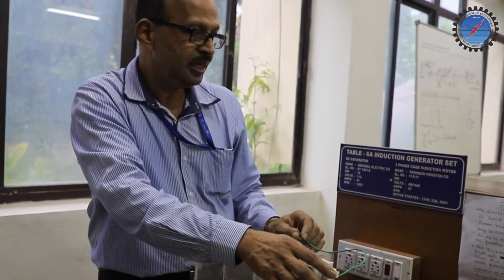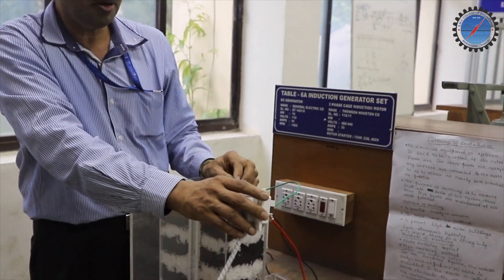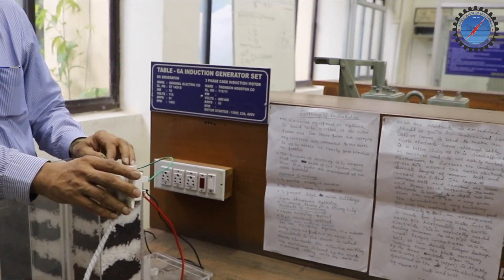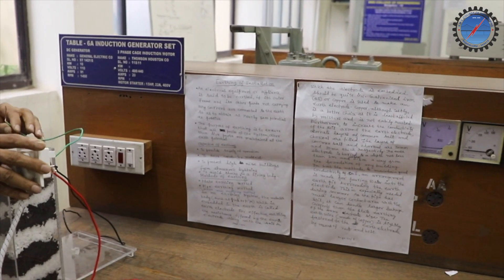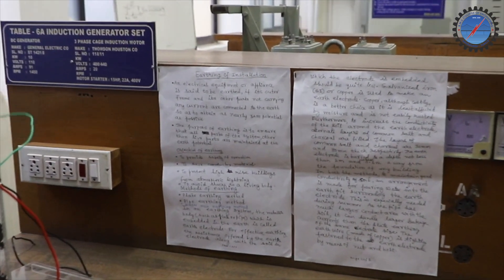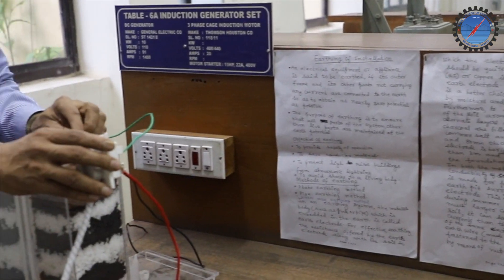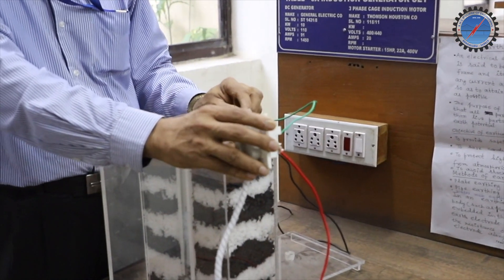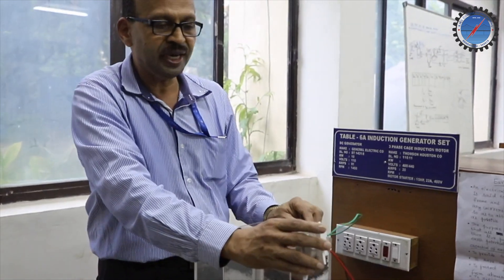Finally, the aim of earthing is to suppress the leakage current, thereby providing protection for the operator, protection for the equipment, and even saving the conductor material. This is all about earthing of installations. This is a demo experiment.